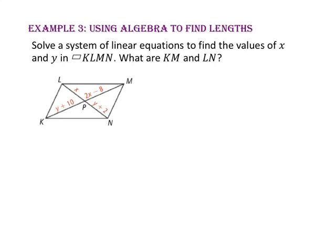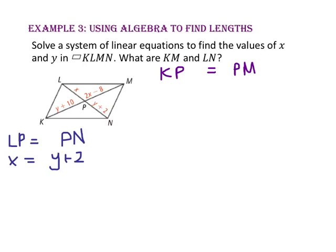In Example 3, we will use algebra to find lengths. Solve a system of linear equations to find the values of X and Y in parallelogram KLMN. What are the lengths of segment KM and segment LN? Since KLMN is a parallelogram, the diagonals bisect each other, so the length of segment LP equals segment PN and the length of segment KP equals segment PM. We substitute X for LP, Y + 2 for PN, Y + 10 for KP, and 2X − 8 for PM. Since we have two variables in each equation, we will use a system of linear equations.